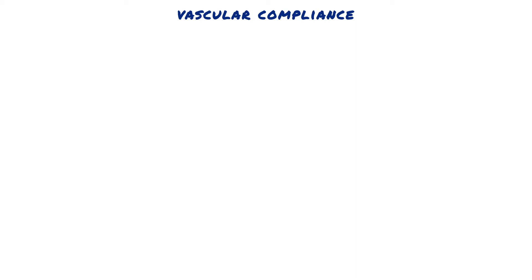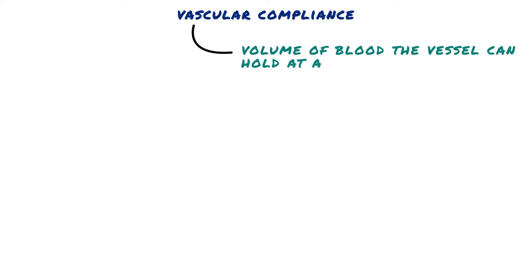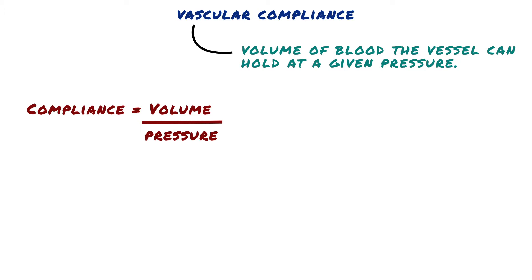Vascular compliance, or capacitance, describes the volume of blood a vessel can hold at a given pressure. Compliance is related to distensibility and is given by the following equation. The higher the compliance of a vessel, the more volume it can hold at a given pressure — or, stated differently, compliance describes how the volume of blood in a vessel changes for a given change in pressure.